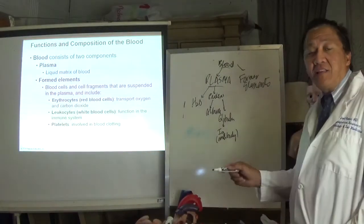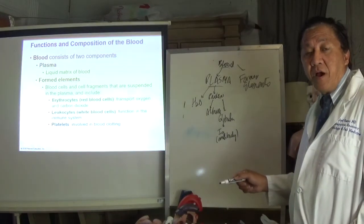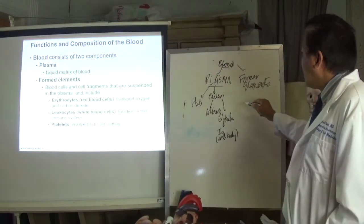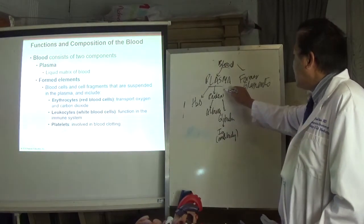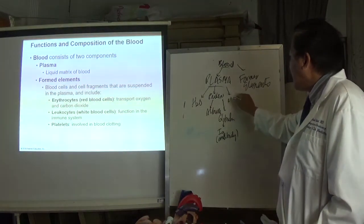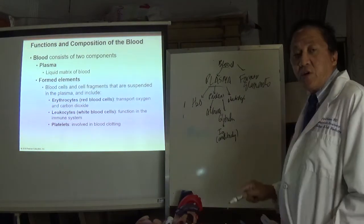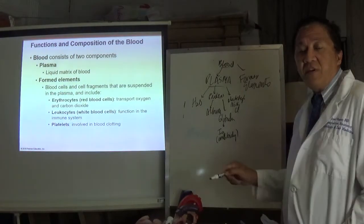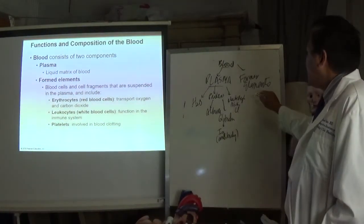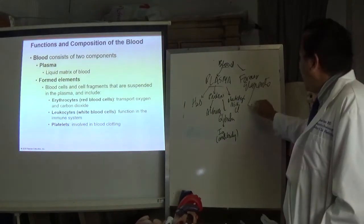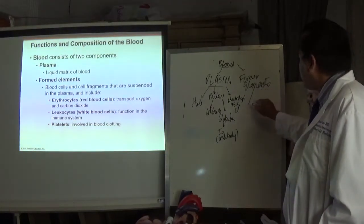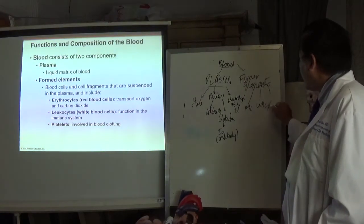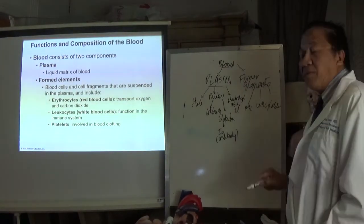The antibody will attack the antigen, which is the foreign body — in this case a bacteria or virus. The plasma also contains electrolytes including sodium, potassium, chlorine, calcium, and others. Formed elements are made up of red blood cells (erythrocytes), white blood cells (leukocytes), and platelets. The platelet is not actually a cell; it is a fragment of a cell.